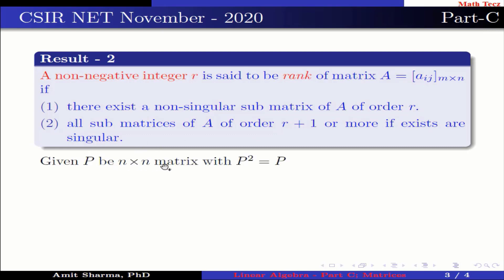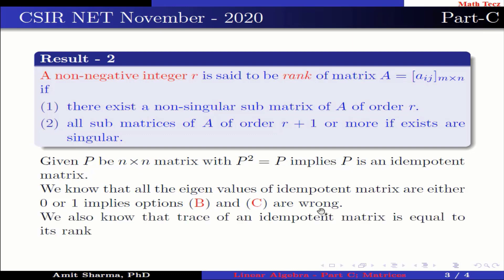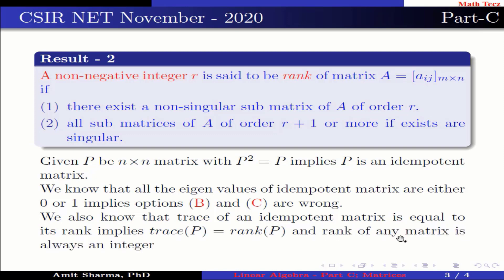Given P is an n×n matrix with P² = P, this implies P is an idempotent matrix. We know that all eigenvalues of an idempotent matrix are either 0 or 1, which implies options B and C are wrong. We also know that the trace of an idempotent matrix equals its rank, so trace of P = rank of P. Since rank of any matrix is always an integer, options A and D are correct.